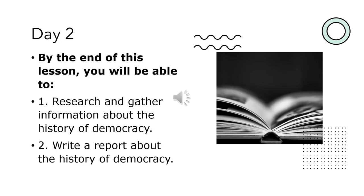As for Day 2, now after talking more about Criterion B and Criterion C, after looking deeper into the MLA-9 citation method, you are going to start your research. You will research and gather information about the history of democracy in the modern world, and you are going to write a report about the history of democracy.